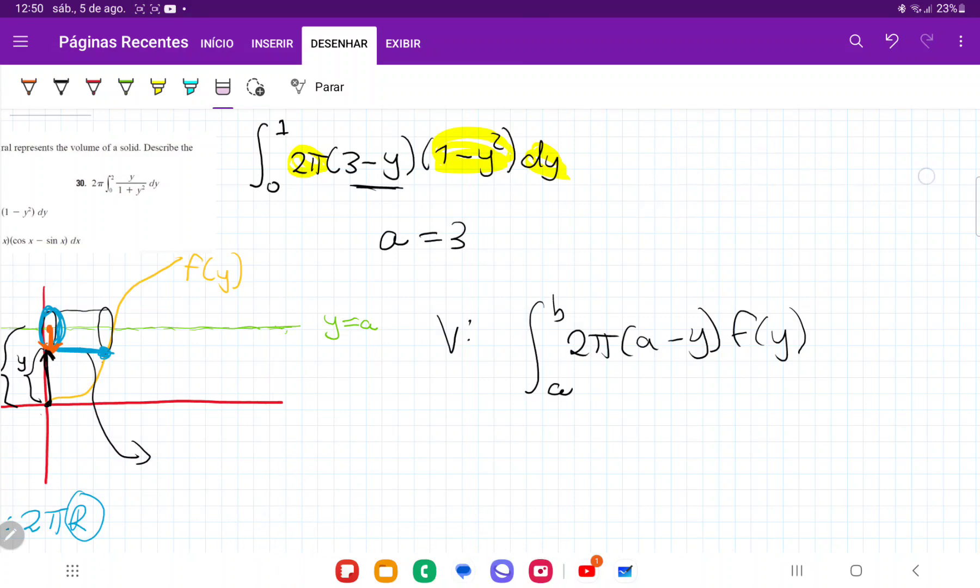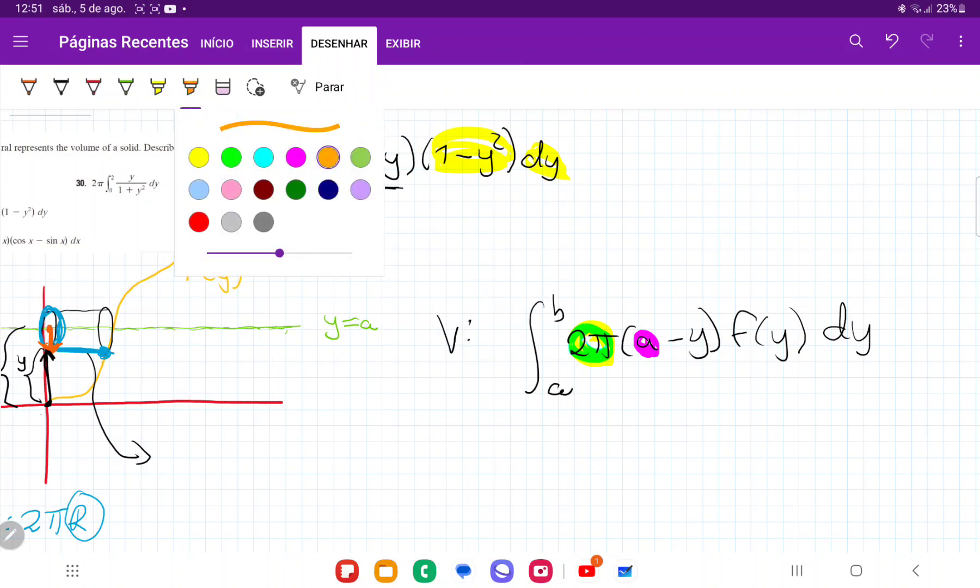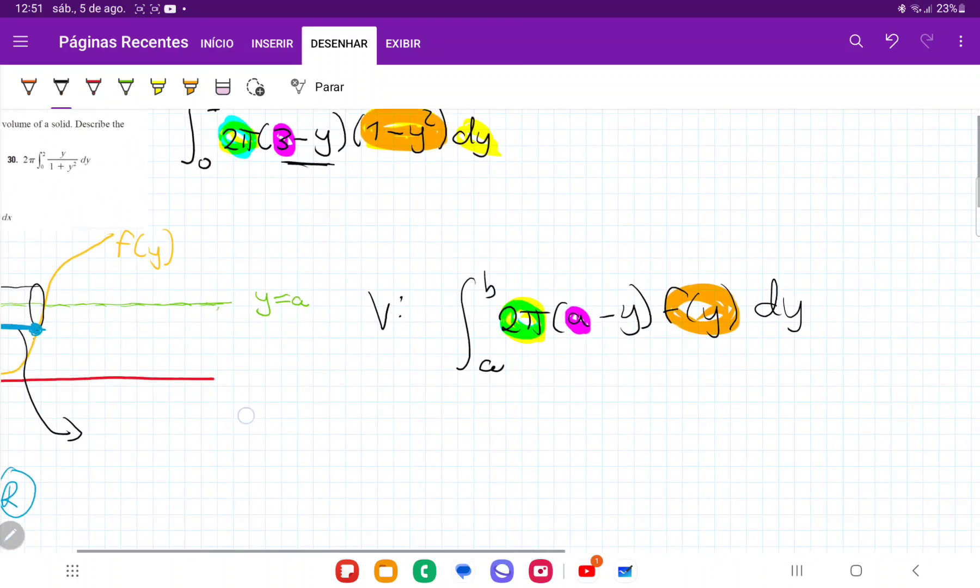So let me just erase some of this so it doesn't get too crowded. So doing a direct comparison, we have 2π is equivalent to 2π. Actually I'm going to do that in a different color. So that's 2π, that's equivalent. We can see here that a is equivalent to three. And lastly, f of y is going to be equivalent to 1 minus y squared. And so our conclusion is that the solid created...